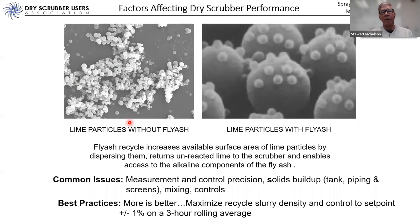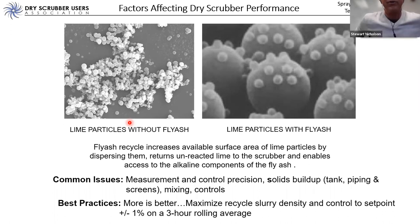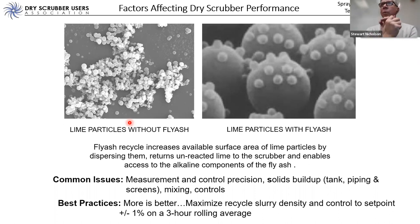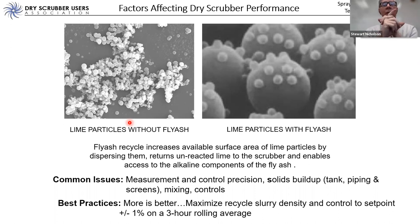Best practice: if you have a recycle system, more is better. Increasing the total recycle rate — circulating more of that fly ash back through the system — saves more money and reduces material accumulation in the spray dryer absorbers. Raise that slurry density and recycle rate up to the maximum achievable within the limitations of agitators, slurry pumps, flow control valves, and atomizers.